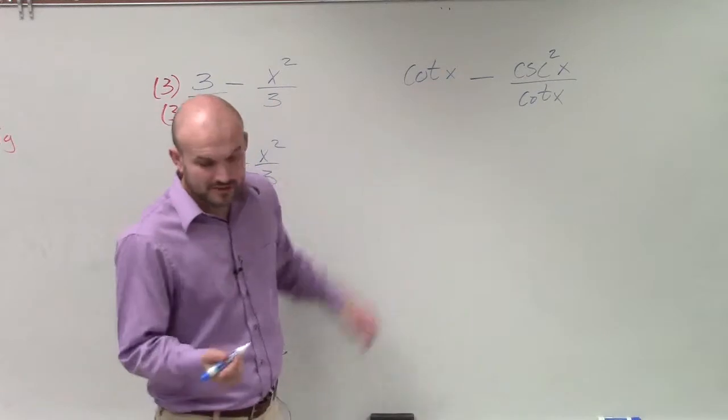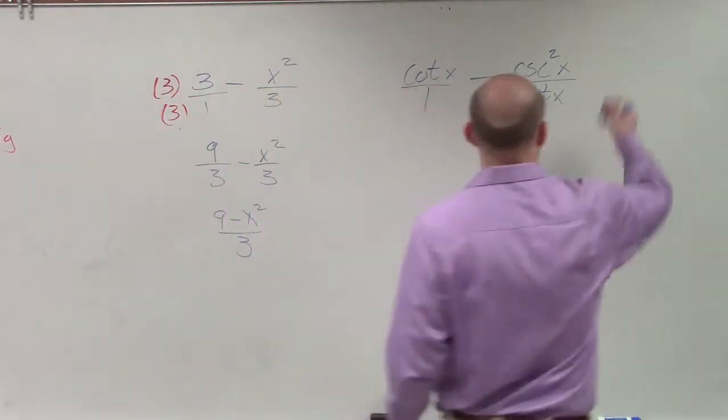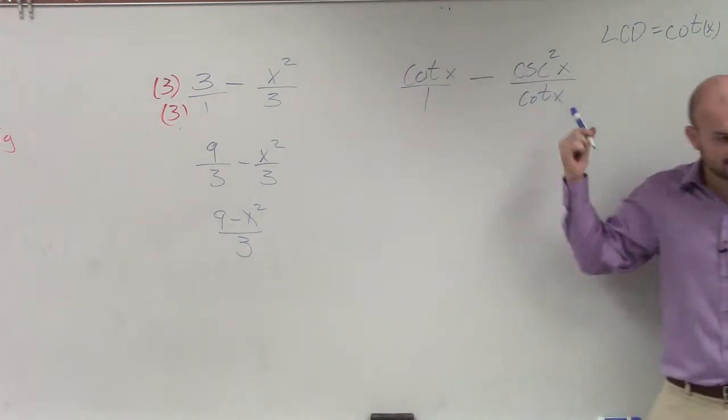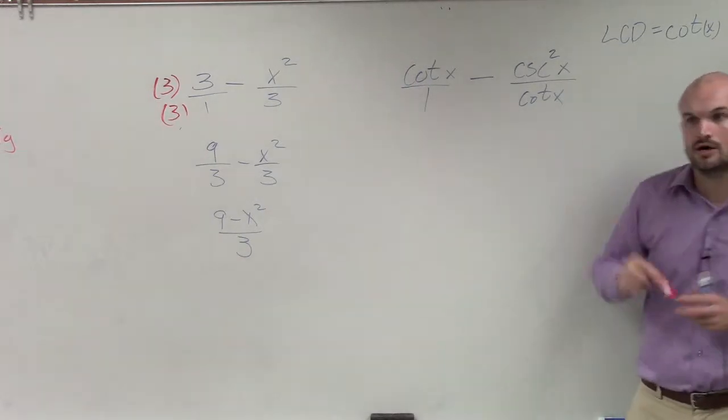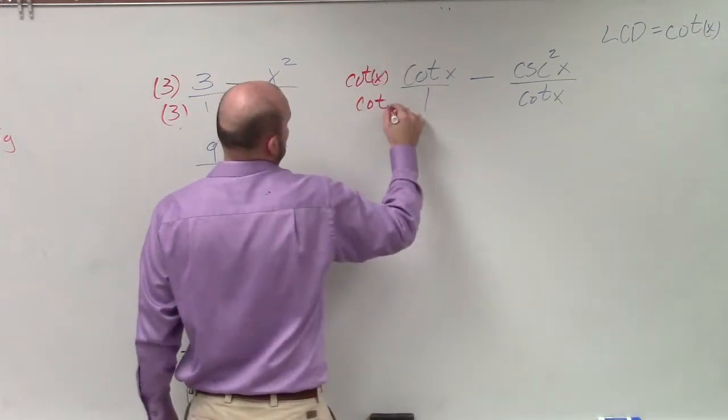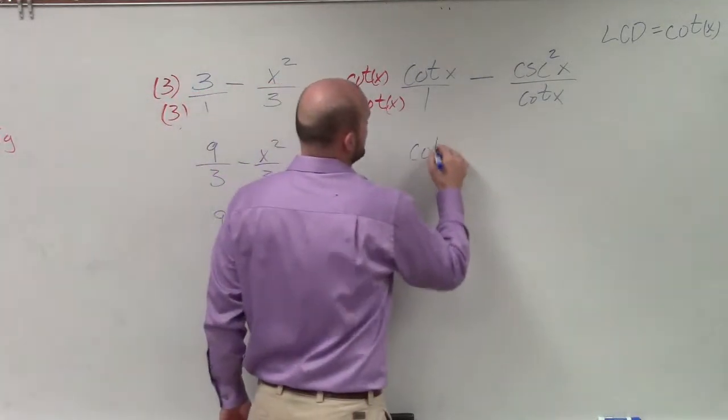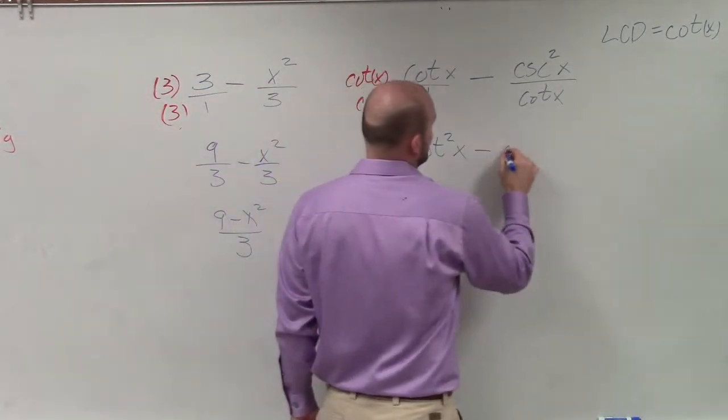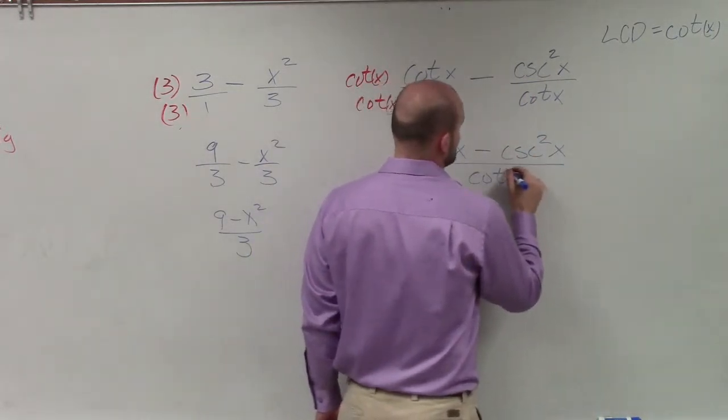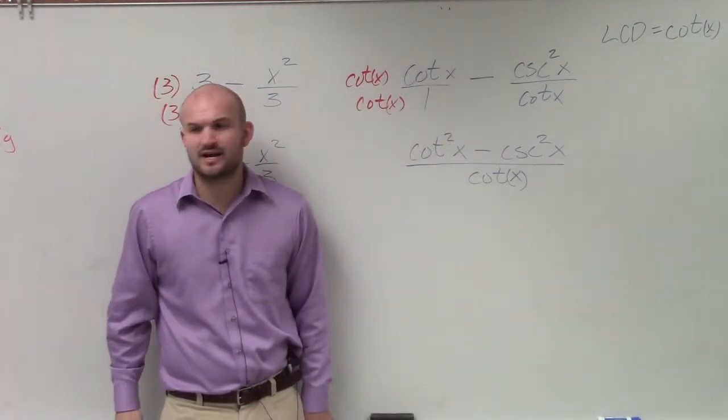So if I was going to do this, what I need to do is I know that the least common multiple, or the least common denominator, is cotangent of x. So therefore, this already has cotangent of x. But over here, I don't, so I have to multiply. By multiplying cotangent of x on top and bottom, I now obtain cotangent squared of x minus cosecant squared of x, all divided by the cotangent of x. Anybody have any questions on that? I just combine the fractions in one.